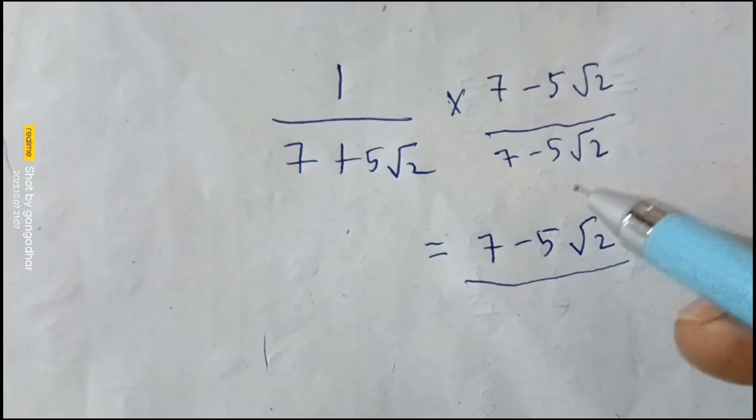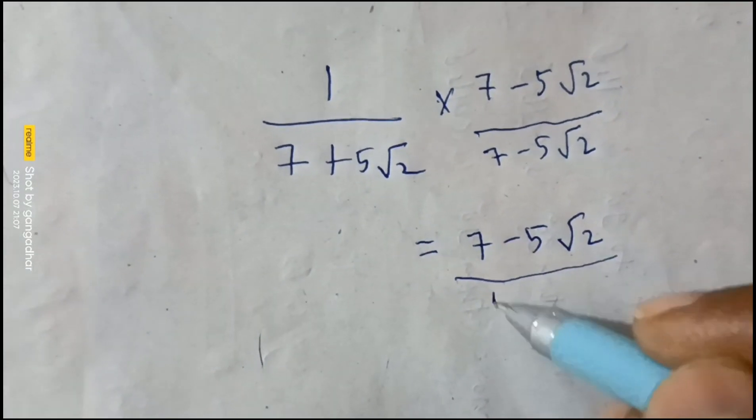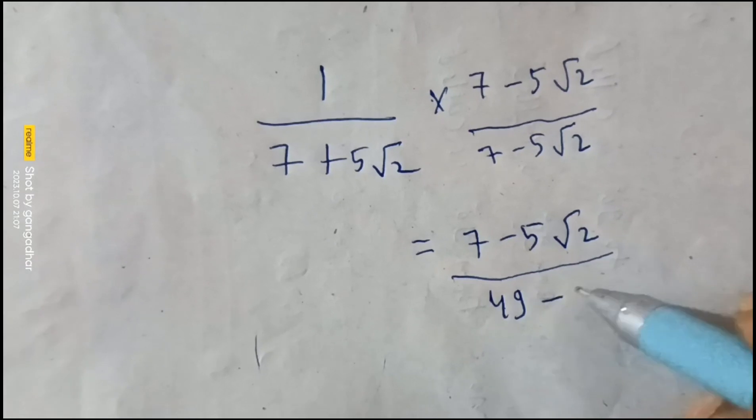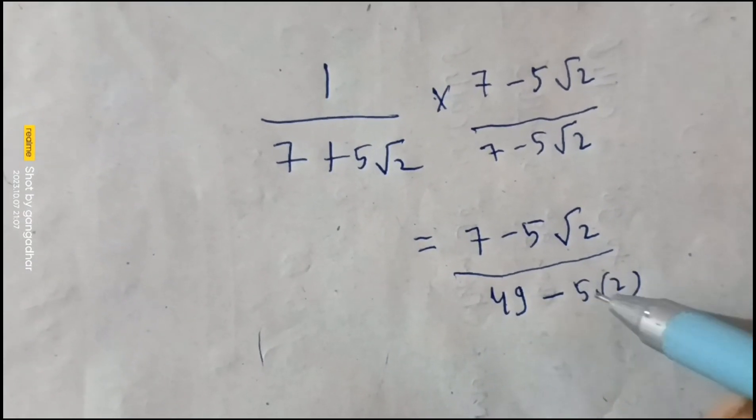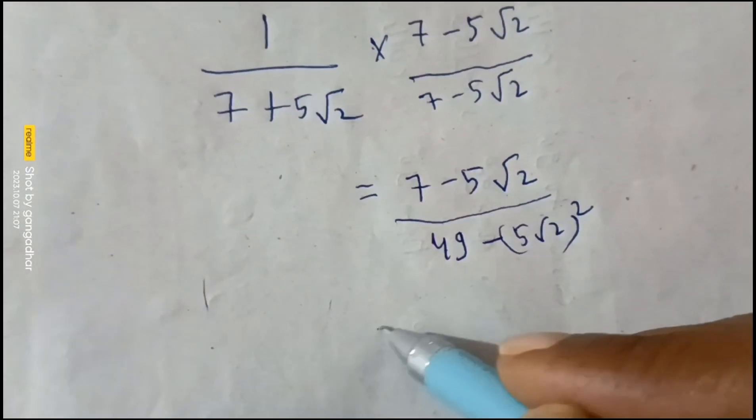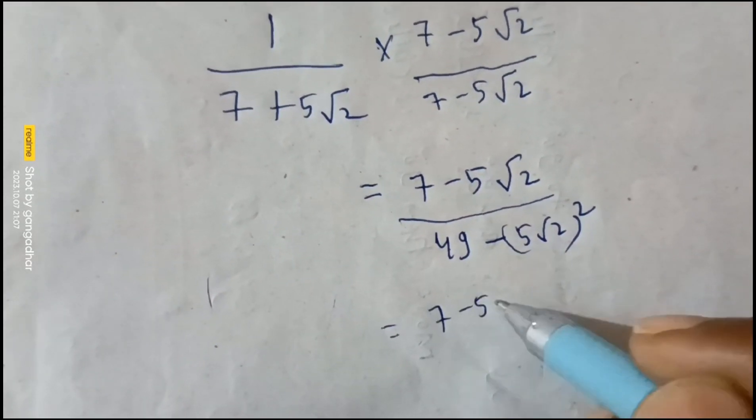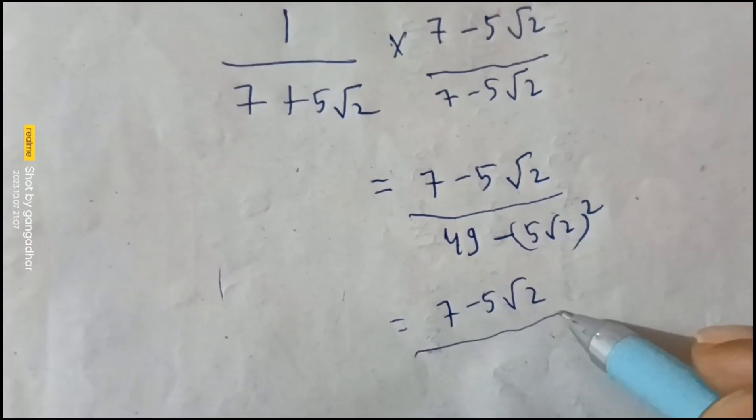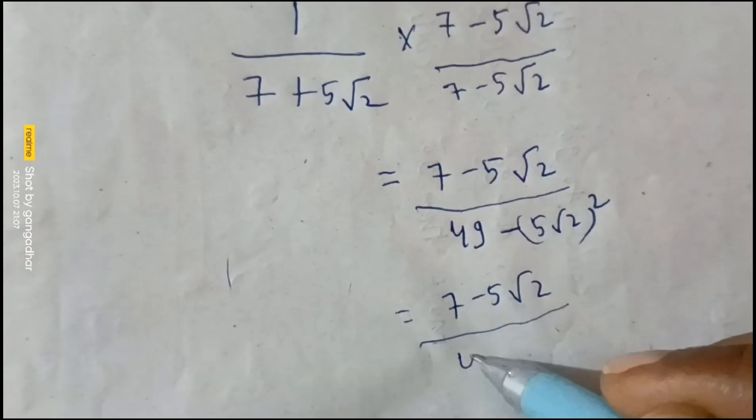Seven into seven is forty-nine, plus times minus gives minus pi root two whole square. Seven minus pi root two. Forty-nine you have to write as it is.